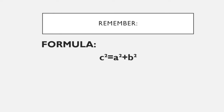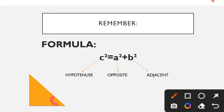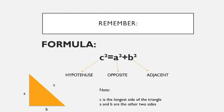Also remember that the formula of the Pythagorean Theorem is C squared is equal to A squared plus B squared, where C represents the hypotenuse, A represents the opposite, and B represents the adjacent. As defined in the figure, our opposite is letter A, our adjacent is letter B, and our hypotenuse is letter C. Note: C is the longest side of the triangle, and A and B are the other two sides.